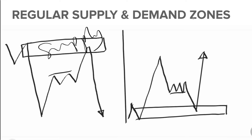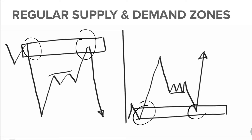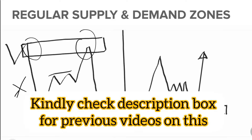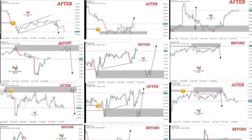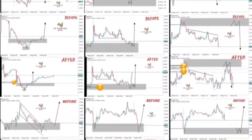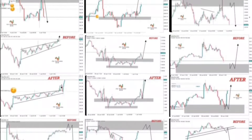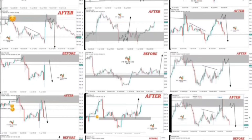This is a supply zone — trades are taken from this point and selling down. Here is a demand zone and trades are taken from this point. I mostly trade rally-base-drop supply zones or drop-base-rally demand zones — not drop-base-drop or rally-base-rally. This is a rally-base-drop supply zone and this is a drop-base-rally demand zone. If you're in my free Telegram channel or on my Instagram, you can see all my previous trade shots of this type.